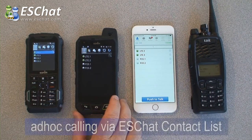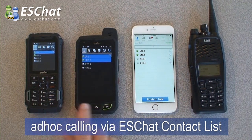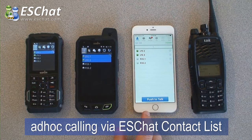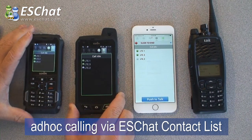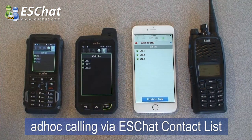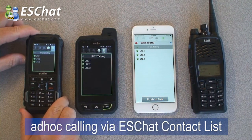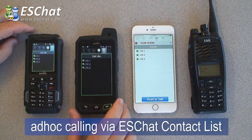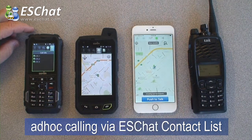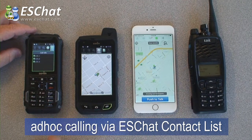ESChat ad-hoc calls are done from the contact list where we can select one or multiple contacts. I've selected both other LTE devices so I can start a call, which will be a three-way call just between my LTE users. The ESChat system supports caller ID, so while within a call we'll see the talker on top of the list of users. For devices that do support live location display, we can look at the map view of the call and see where our call participants are as well as who's talking.